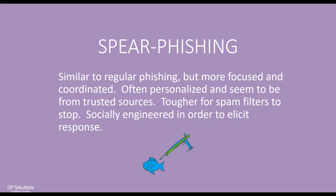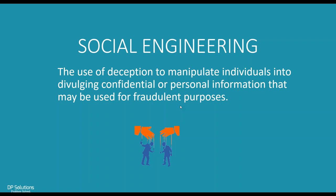Spear phishing is a little different. This is similar to regular phishing, but it's focused and coordinated. It's usually a much more organized and targeted attack on high-level individuals — executives of companies, managers, people who have levers of power who can do a lot of things with their influence if tricked. Social engineering is the use of deception to manipulate individuals into divulging confidential or personal information that may be used for fraudulent purposes. The technology is pretty good, but what's more fallible than the technology is the user. This social engineering strategy is really used to take advantage of the ignorance of many end users.